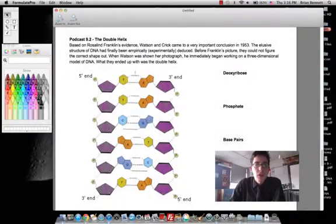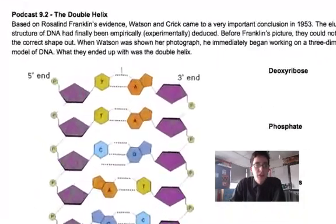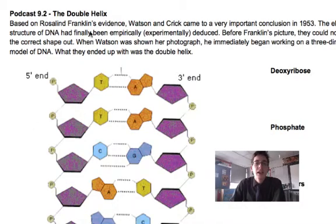Hey everybody, this is podcast 9.2 and we're going to start taking a look at the double helix of DNA. What we learned in the first podcast and in class is that there was a lot of research that got put into the shape of DNA, and the double helix is what ended up coming out of it.